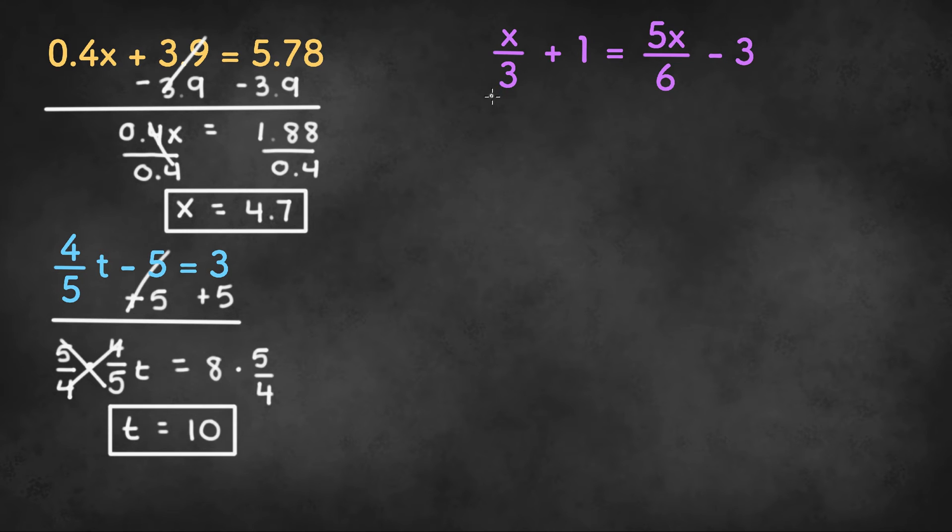The last example we have here has fractions with different denominators. And when we have fractions with different denominators, we need to multiply both sides by the least common multiple of the denominators.